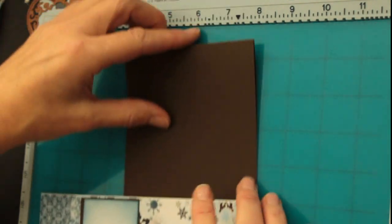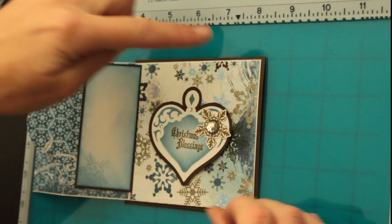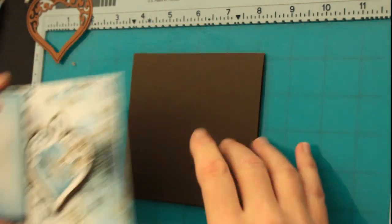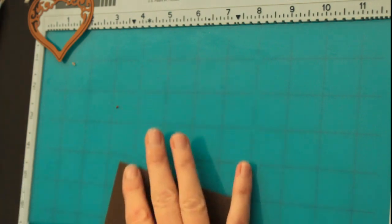So if you only use a quarter sheet, just a square, not a card front, you have a place to write. So then you just decorate it.